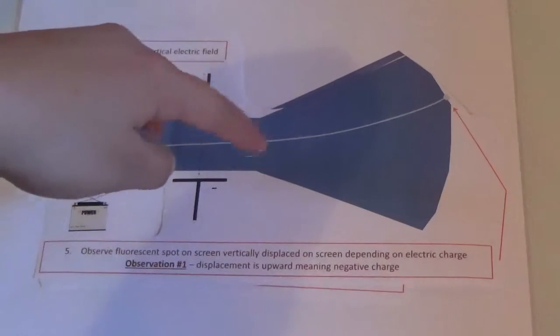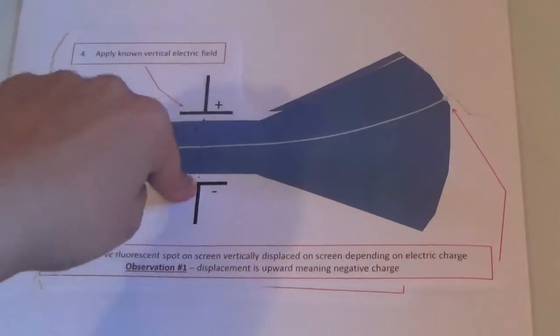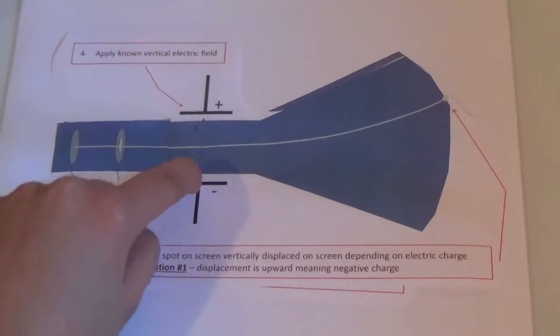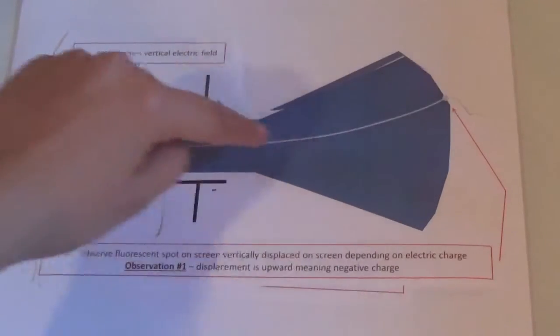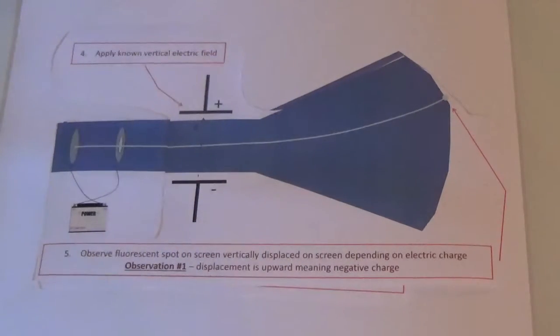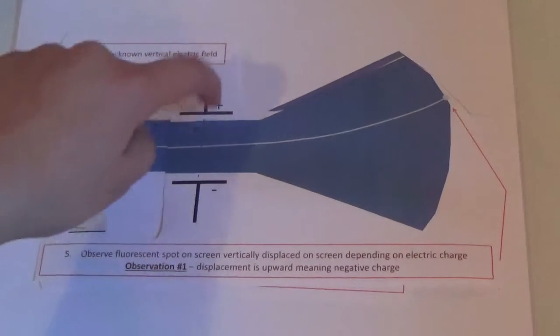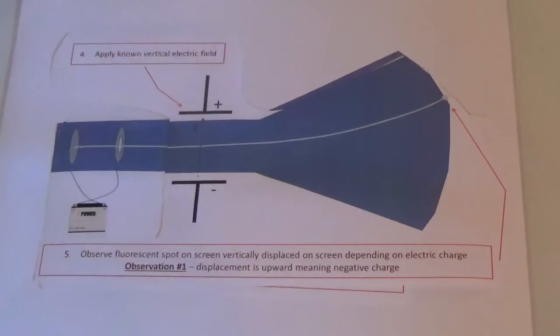When a vertical electrical field is applied, which is here and here, the ray of particles moves upwards towards the positive charge. From this, we can observe that the particles must have a negative charge since they are attracted to the positive charge.